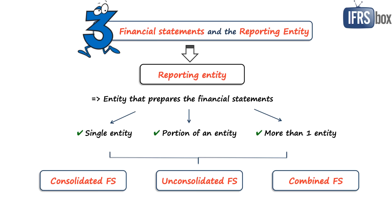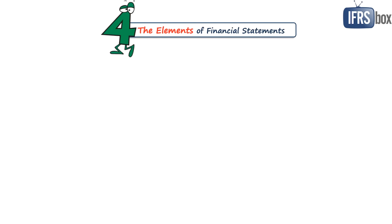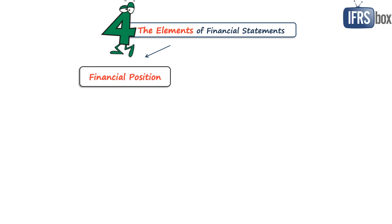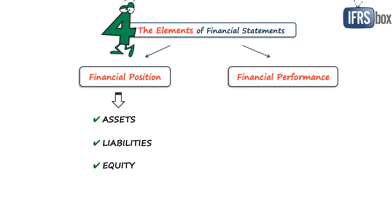Chapter 4 is about the elements of financial statements. Elements relating to financial position are assets, liabilities and equity. Elements relating to financial performance are income and expenses. The framework defines each element and provides examples. It is a very extensive chapter full of details that lays a good foundation to build upon.